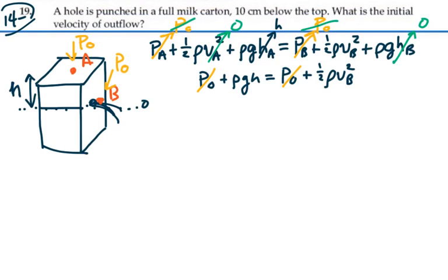So now we have ρgh equals one half ρ velocity of B squared. If we divide both sides by the density of the fluid, multiply both sides by two, and take the square root, we have the square root of 2gh equals the velocity of B.